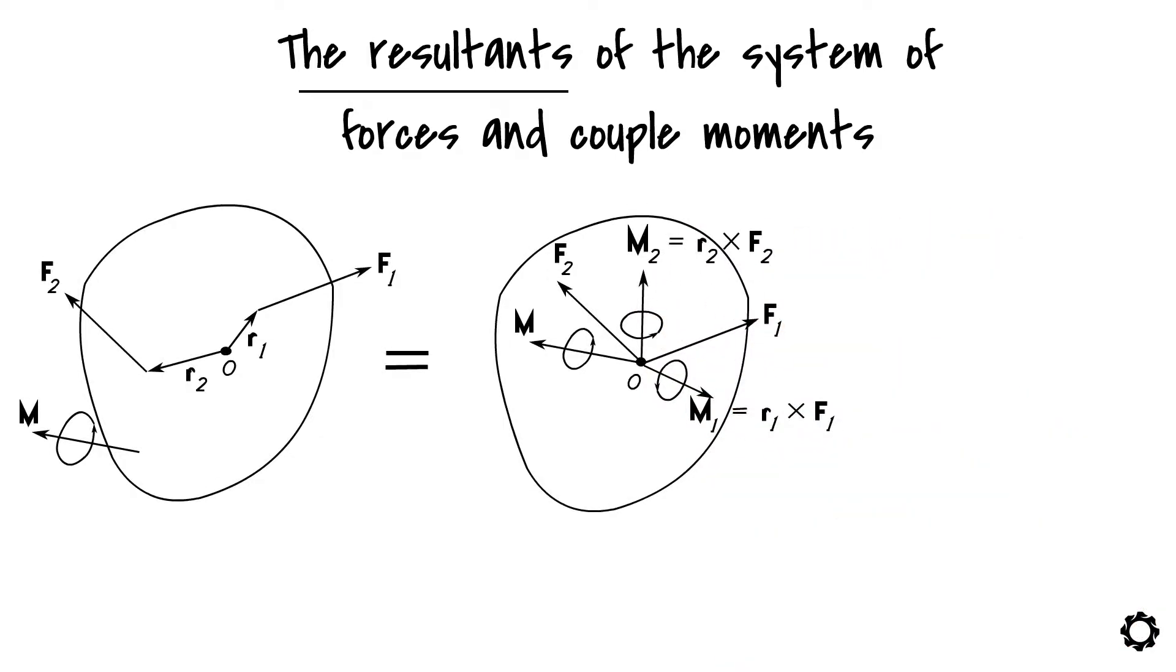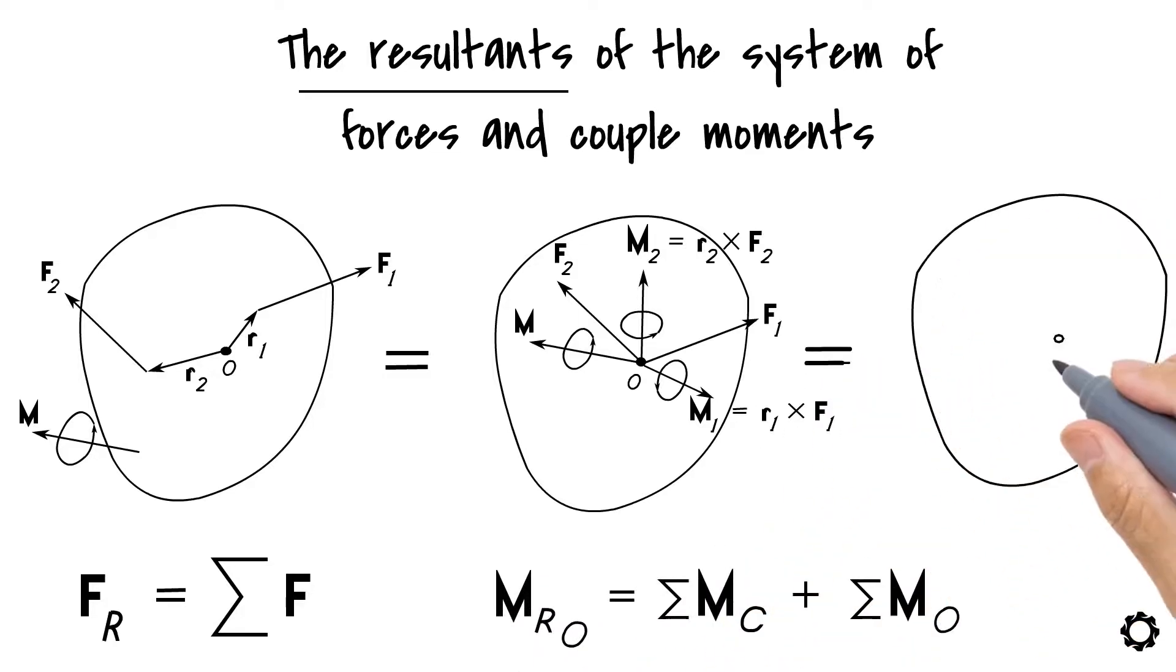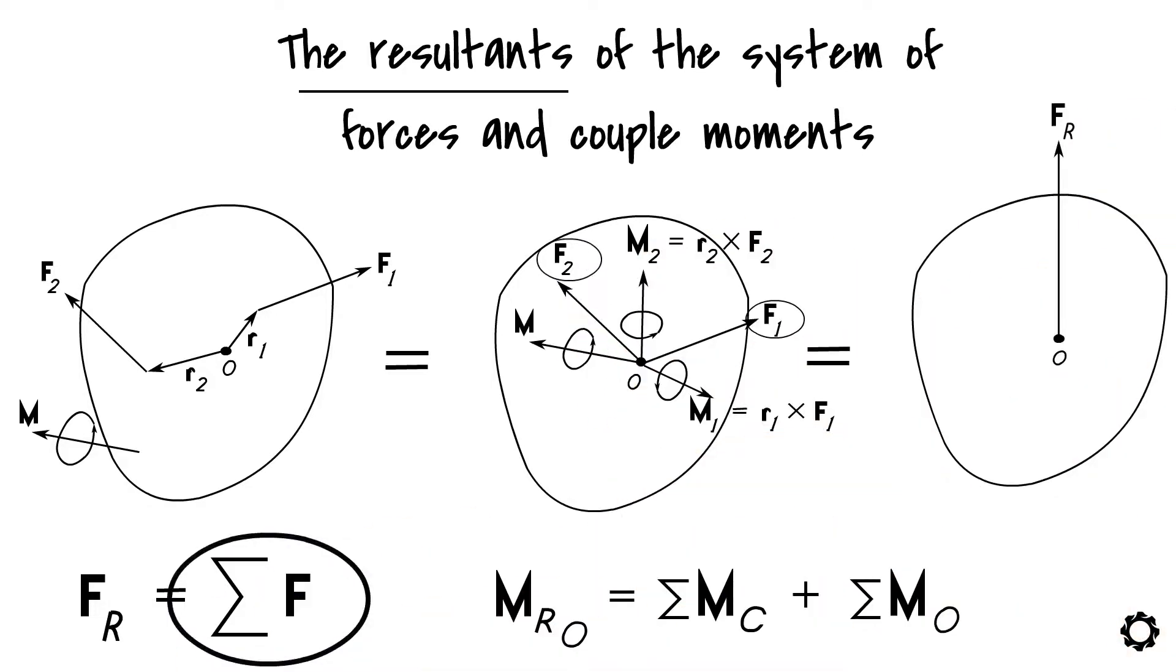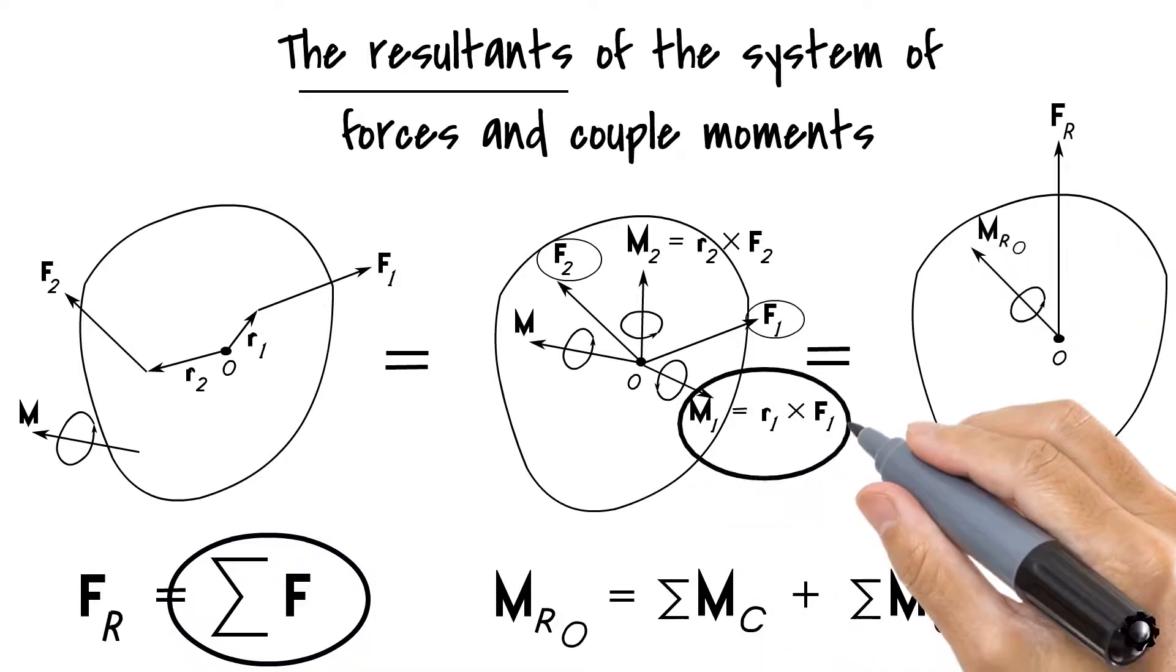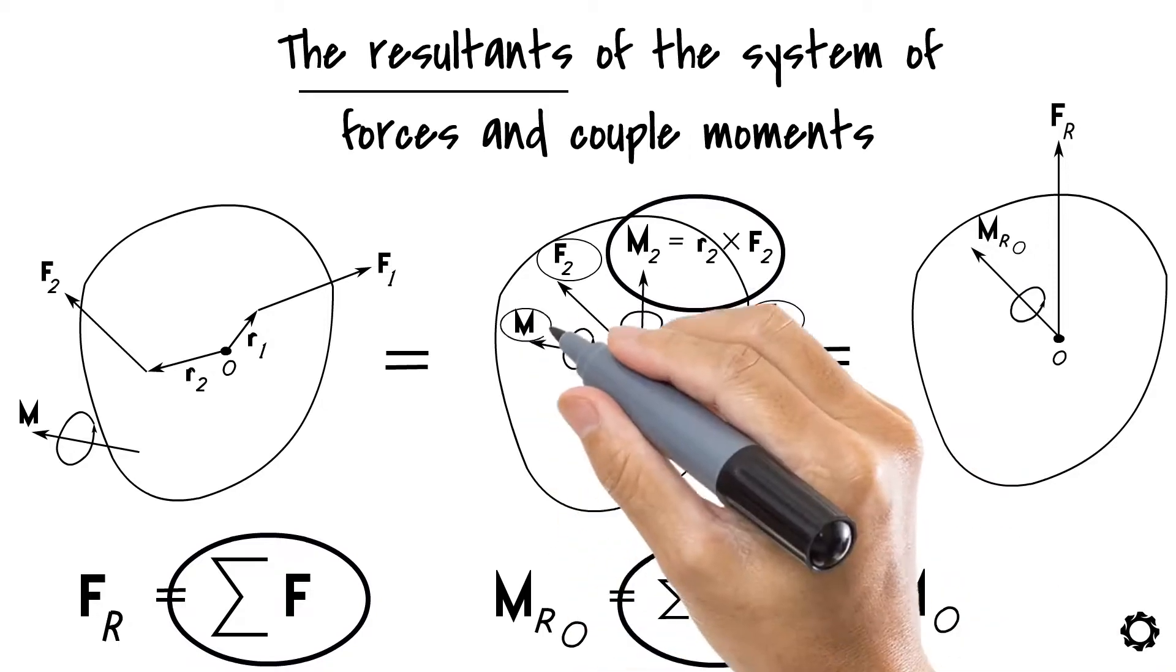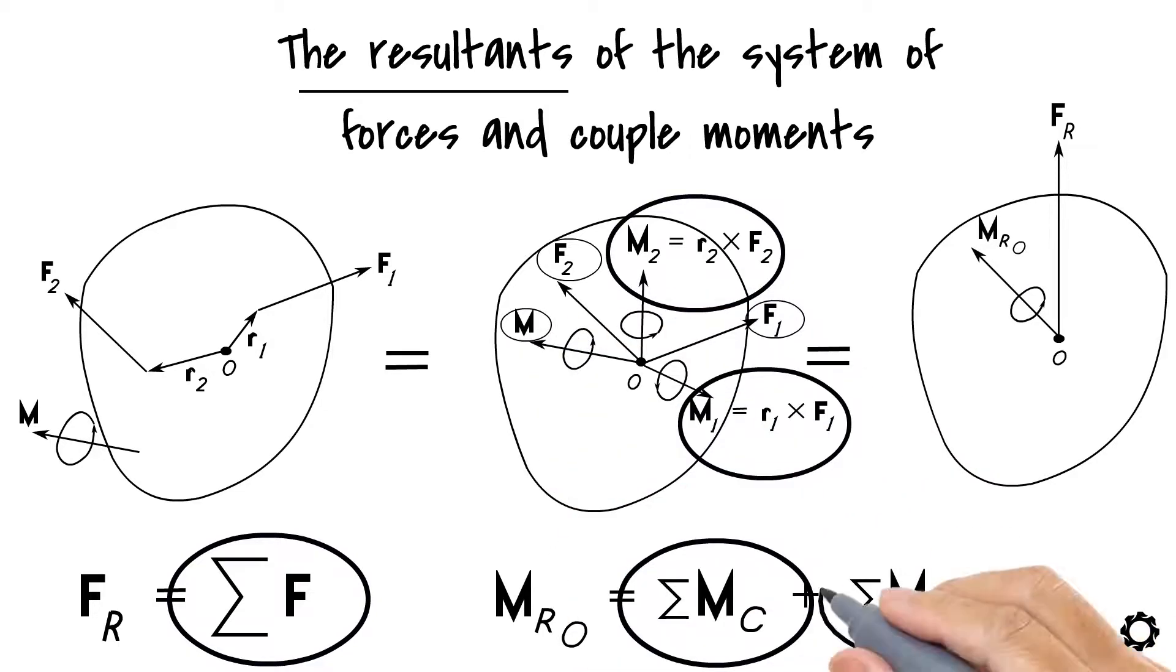This simplification leads to the following set of equations. FR equals summation of F. MRO equals summation of MC plus summation of MO, where FR is the resultant force of the system which is equivalent to the sum of all forces, summation F acting at point O. In turn, MRO in the equation is the resultant couple moment of the system which is equivalent to the sum of all the couple moments, summation of MC plus the moments about point O of all the forces, summation MO.